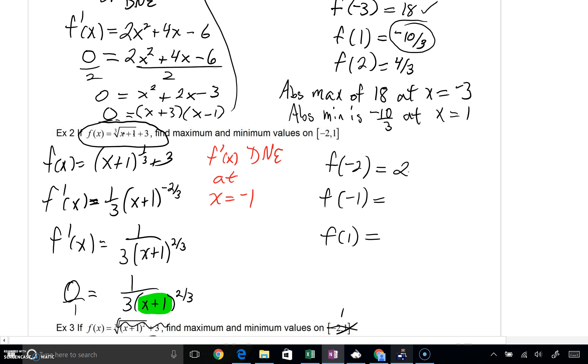f of negative 1. Well, negative 1 plus 1 is 0. The cube root of 0 is 0. 0 plus 3 is 3. When I plug in a 1, however, 1 plus 1 is 2. So I'd be left with the cube root of 2, which does not simplify, plus a 3. Now, even without a calculator, of course, a calculator could have been utilized to get a decimal, especially for this last one.